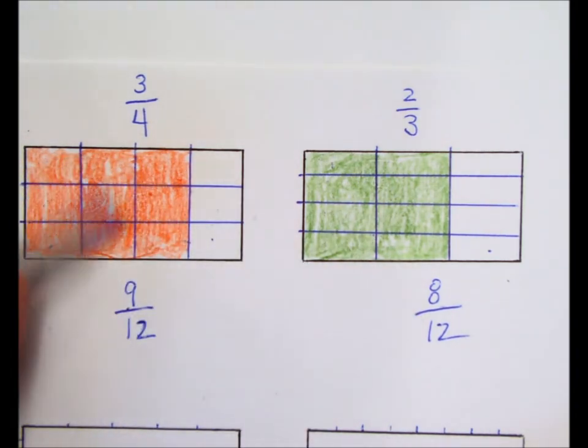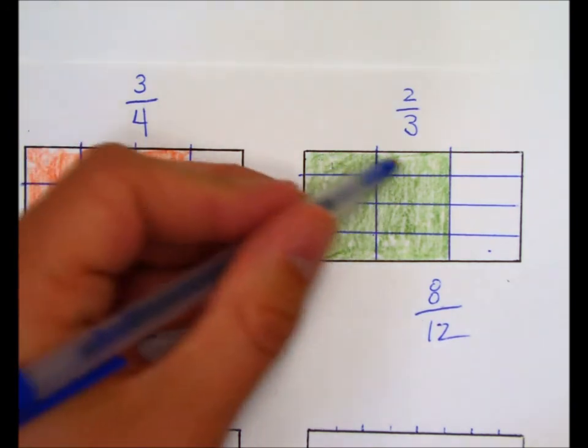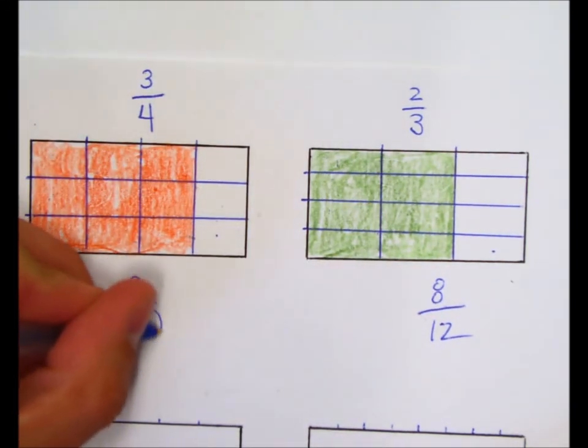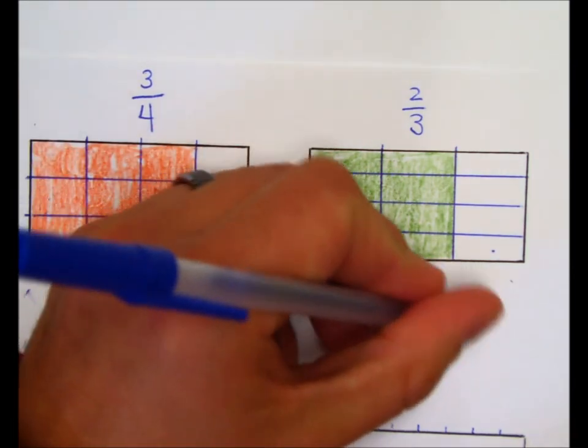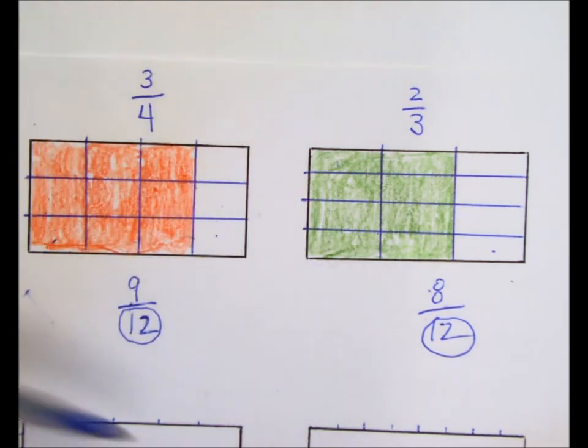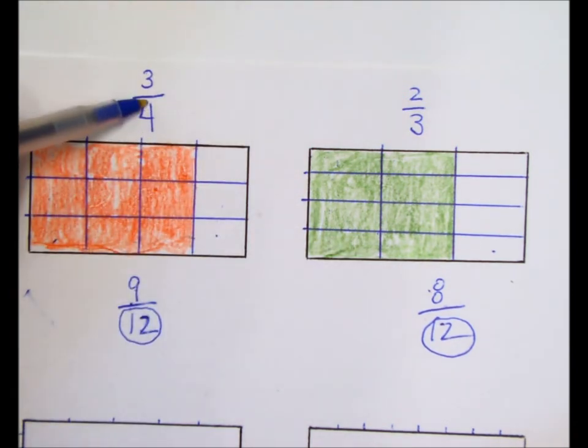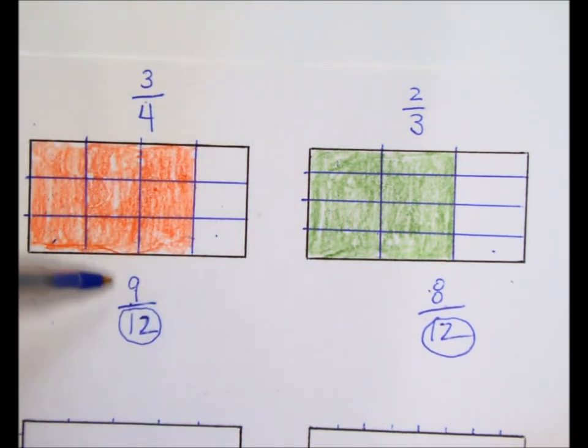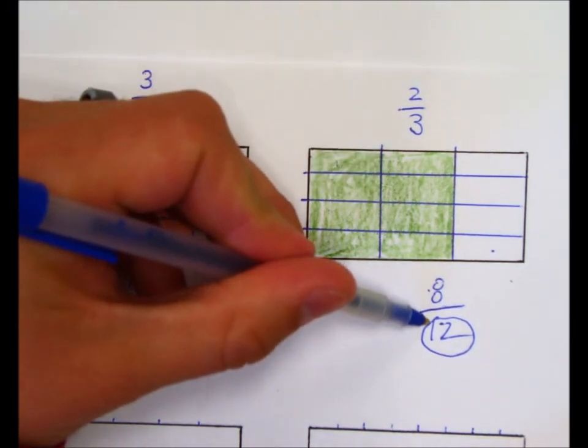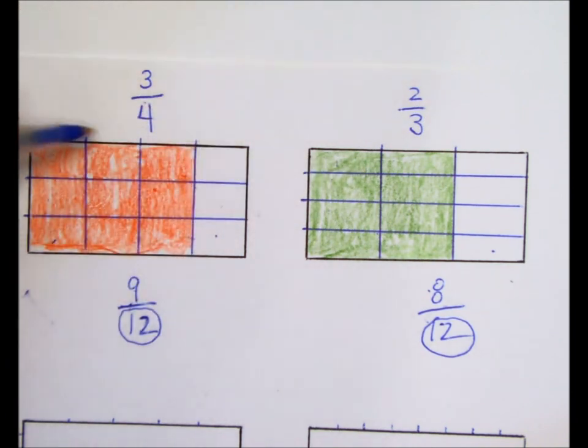I haven't changed the amount of orange that I put on here. I haven't changed the amount of green I've put on here. But suddenly, because the denominators are now the same, I can easily tell that 9 is bigger than 8. So, 3/4 is the same thing as 9/12. 2/3 is the same thing as 8/12. These are called equivalent fractions.